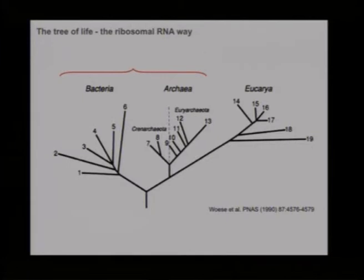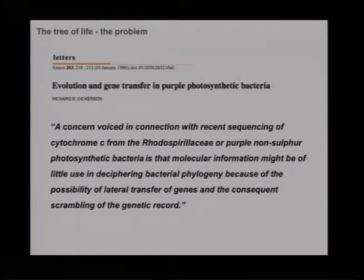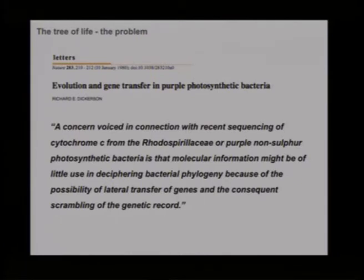However, a problem arises when you try to do this for prokaryotes — bacteria and archaea. In 1980 Dickerson published in Nature 'Evolution and Gene Transfer in Purple Photosynthetic Bacteria,' expressing concern that molecular information might be of little use in deciphering bacterial phylogeny because of the possibility of lateral transfer of genes and the consequent crumbling of genetic record. Prokaryotes, unlike humans, can acquire DNA from the environment or neighbors, incorporate it into the genome, and just live with it.